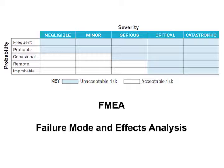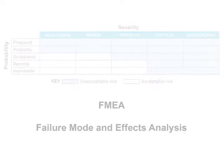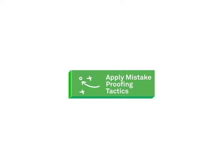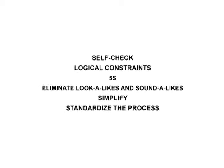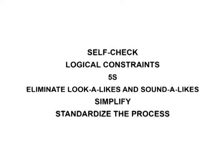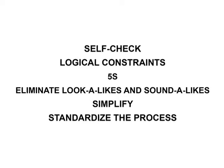The important thing is to consider the key risk points. The third step is to apply recognized mistake proofing tactics to the steps with the most associated risk. There are many tactics, so rather than apply them in a random fashion, we suggest the following logical sequence.